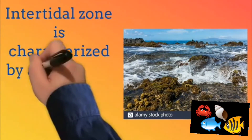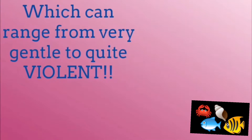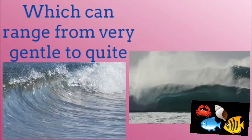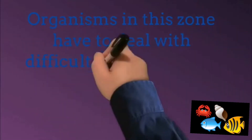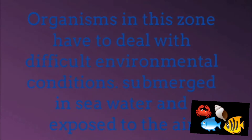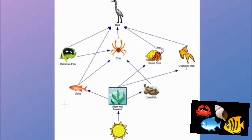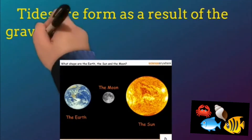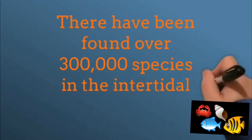Intertidal zone is characterized by a great deal of water movement, which can range from very gentle to quite violent. Organisms in this zone have to deal with difficult environmental conditions — submerged in seawater and exposed to the air. We can find some food webs here. Tides are formed as a result of the gravitational forces between Earth, Sun, and the Moon. There have been found over 300,000 species in the intertidal zone.